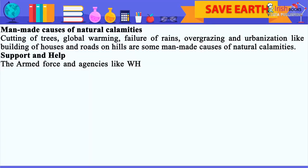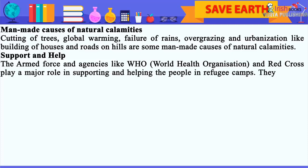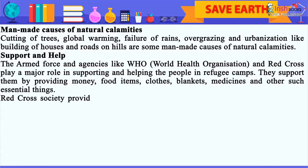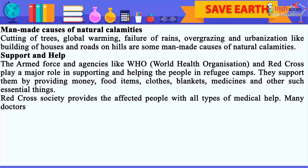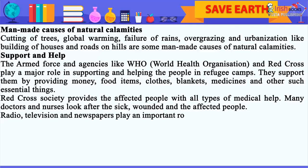Support and health: Armed forces and agencies like WHO (World Health Organization) and Red Cross play a major role in supporting people in refugee camps. They provide money, food items, clothes, blankets, medicines, and other essential things. The Red Cross Society provides all types of medical help, and many doctors and nurses look after the sick, wounded, and affected people.